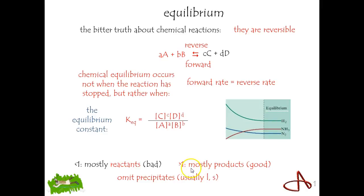And if it's greater than 1, you've got mostly products. And don't forget that we omit precipitates. Usually that means liquids and solids, so this only deals with the things that are in the system. And that's the big hint, obviously,